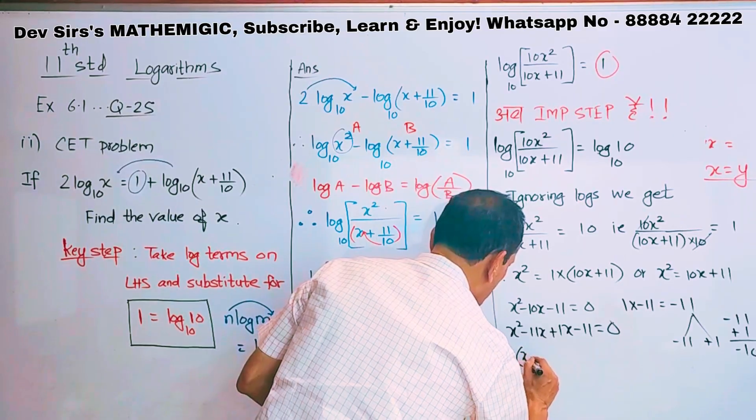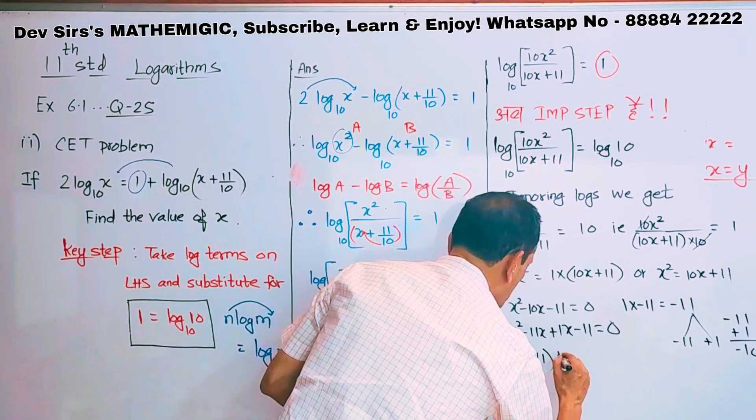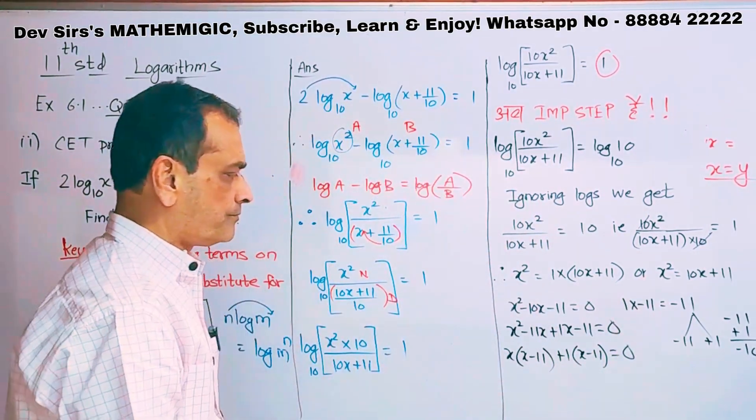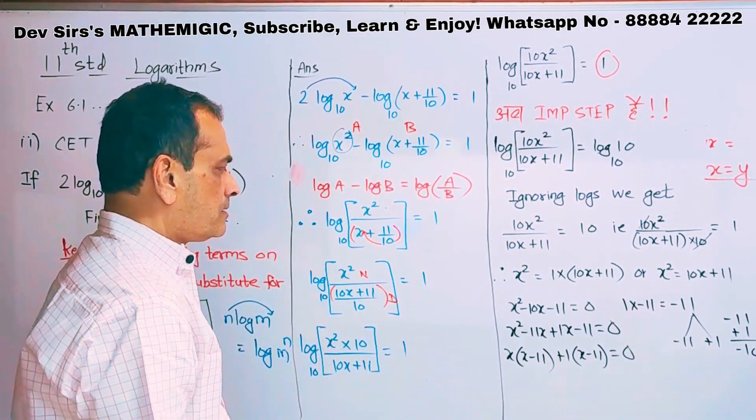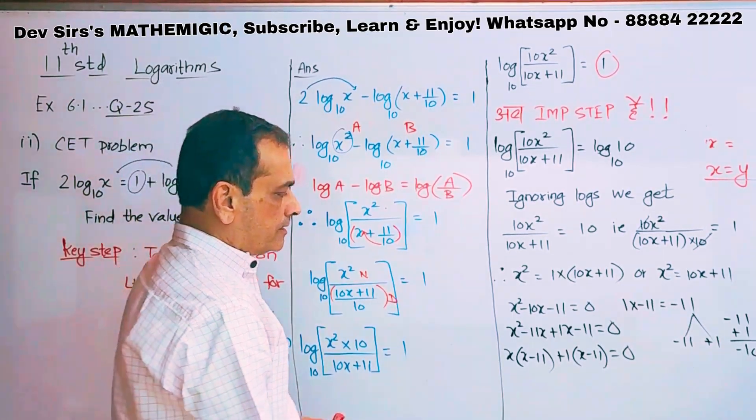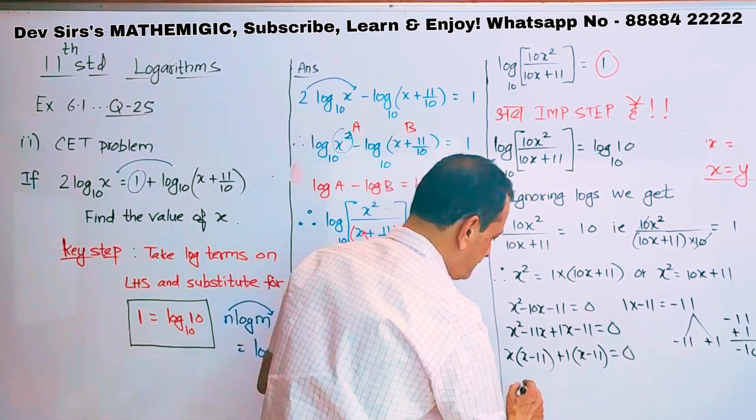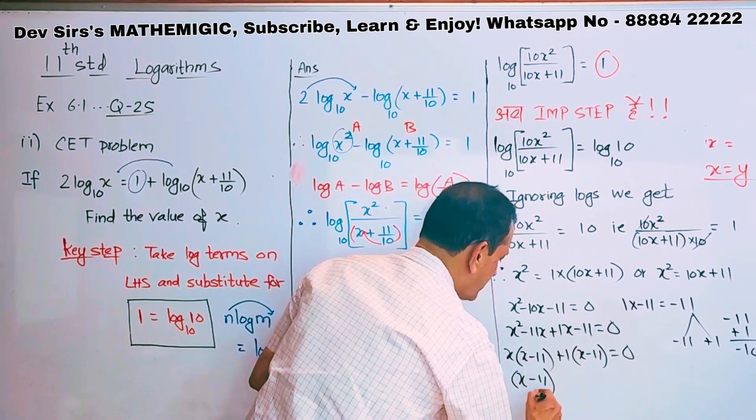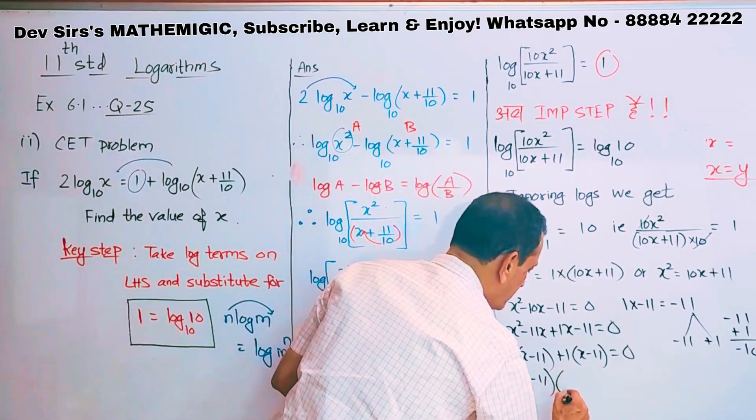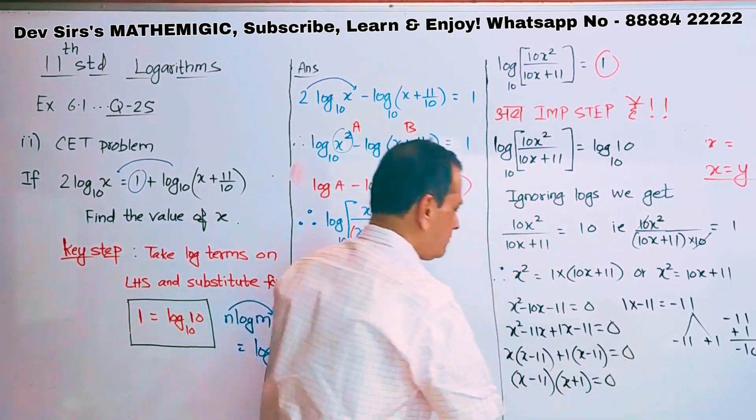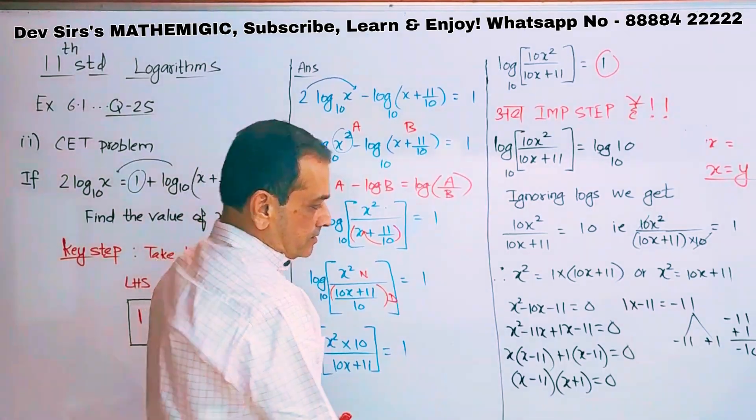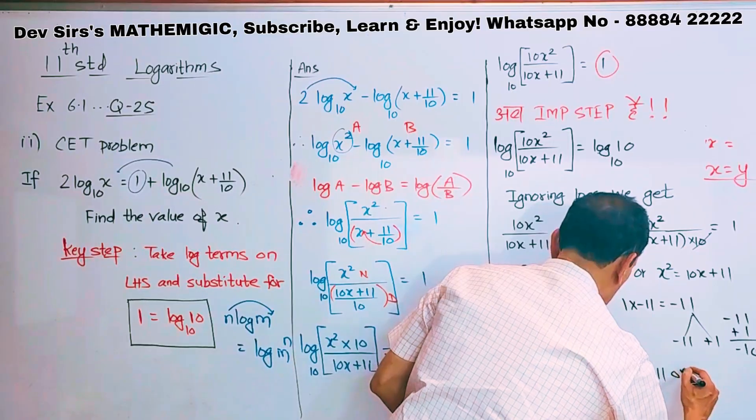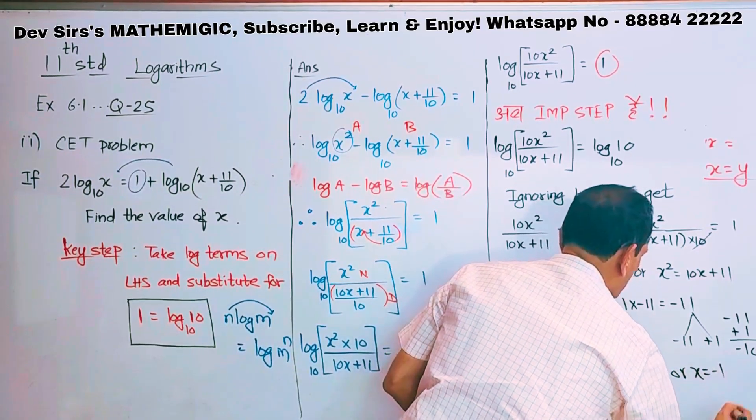So the factors are x squared minus 11x plus 1x minus 11 equal to 0. x into bracket x minus 11 plus 1 into bracket x minus 11 equal to 0. So x minus 11 equal to 0 gives you x equal to 11 or x equal to minus 1.